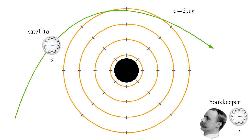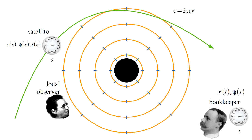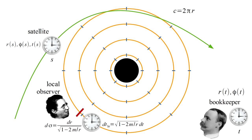Now we launch a satellite and track it as it falls freely in this curved spacetime. The satellite has a clock that reads time s, the proper time for its trajectory. For each value of s, the satellite can record its current r and phi coordinates as well as bookkeeper time t. We can also have local observers positioned at rest on the rings. They will measure proper distance sigma, where an increment d sigma is greater than an increment dr by a factor of one over square root of one minus two m over r. And they will have their own clocks that measure local time, where an increment dt local is less than an increment dt by a factor square root one minus two m over r.